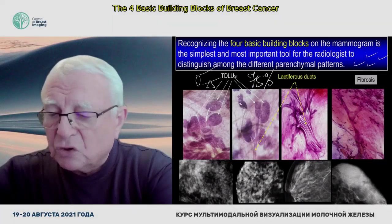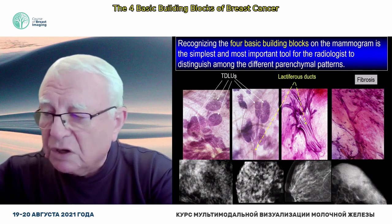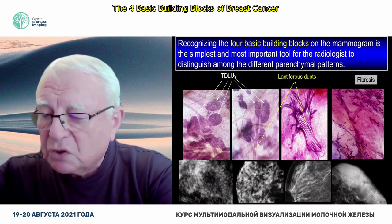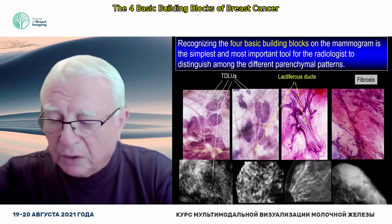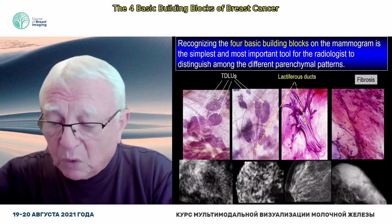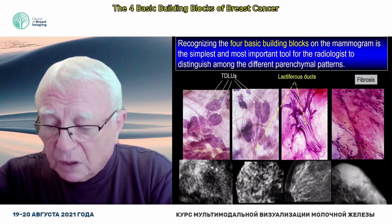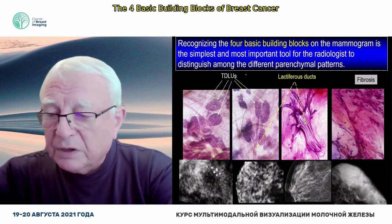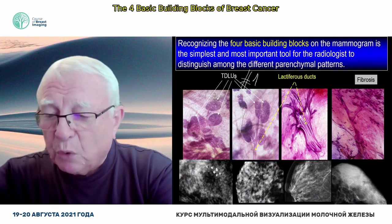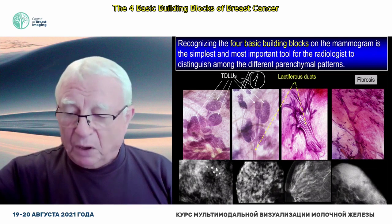Here comes the X-ray, and the X-ray images this terminal ductolobular unit. So what do you see on the mammogram? A one-and-a-half to two millimeter size, nodular, oval-shaped density. Dear colleagues, this is the most important number-one basic building block.